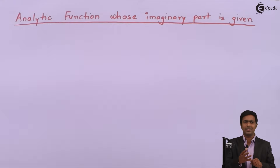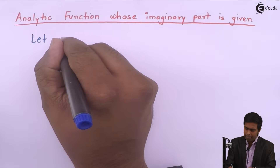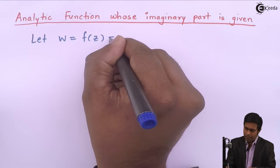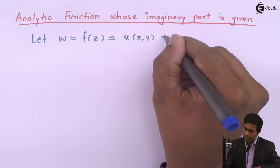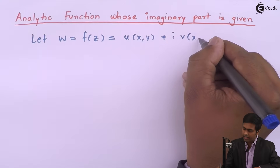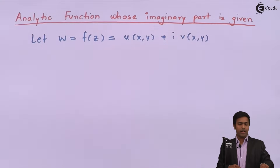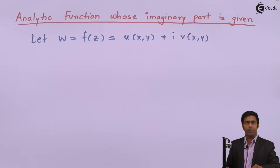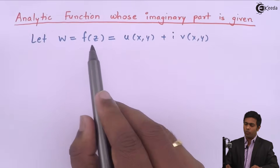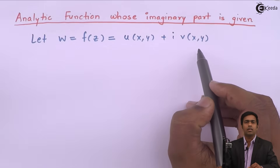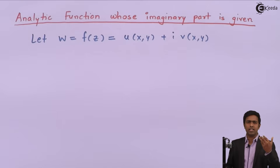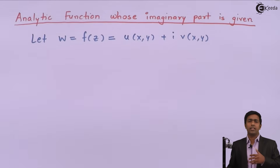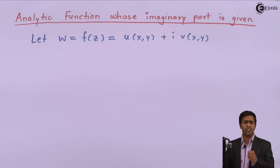For that, we will consider one analytic function. So let's consider the analytic function w, which is a function of z, and we know that it is defined by u(x, y) plus i·v(x, y). So let f(z) be the analytic function. Now we have to find out the analytic function f(z) when v is given, since v is the imaginary part.